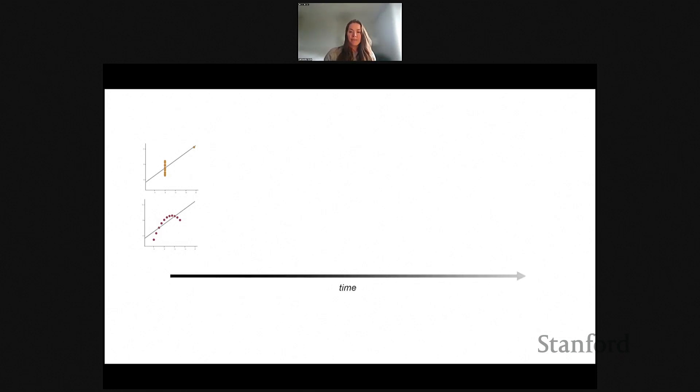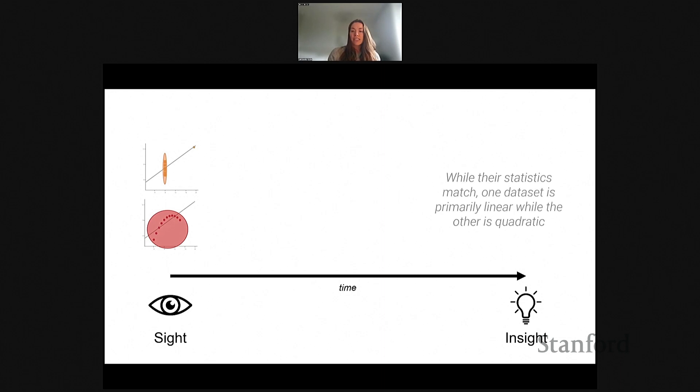I'm going to focus on just these two scatter plots to explain this. The process of interpreting data happens over time. It starts with our sense of sight. Essentially, light from the red and orange points goes into the eye, fires off signals to start interpreting information. At the end of this process, we reach insights - the knowledge we generate using visualizations. For example, one insight we might infer is while these data sets have identical statistics, they have qualitatively different shapes we can describe as either linear or parabolic.